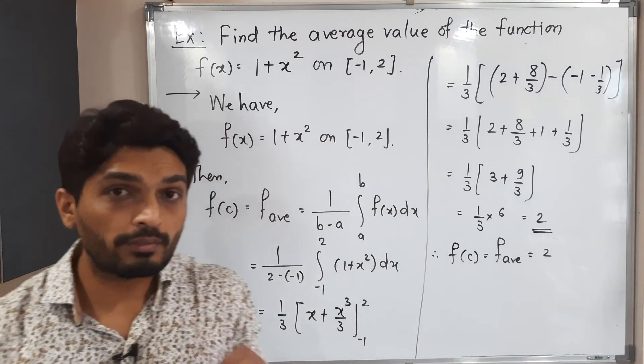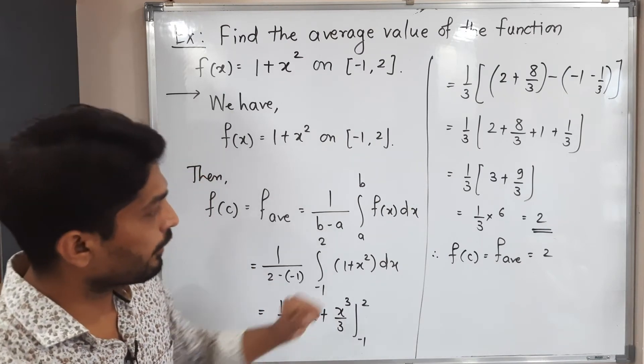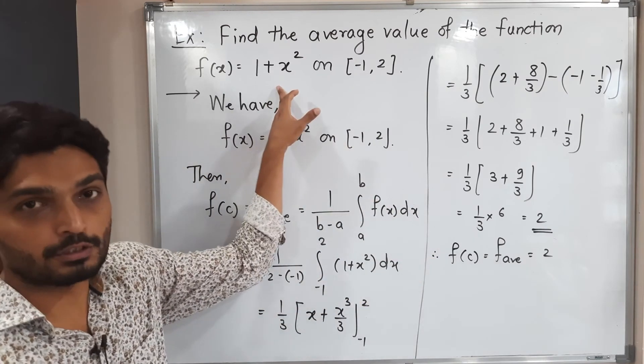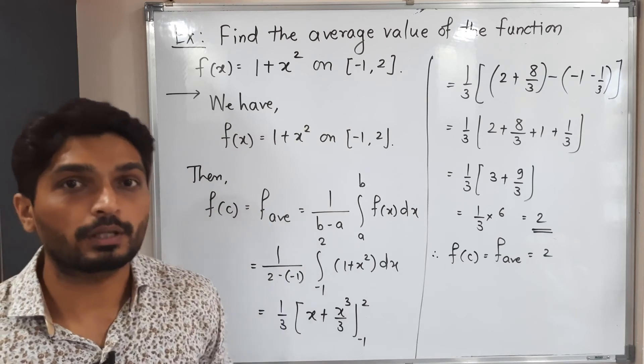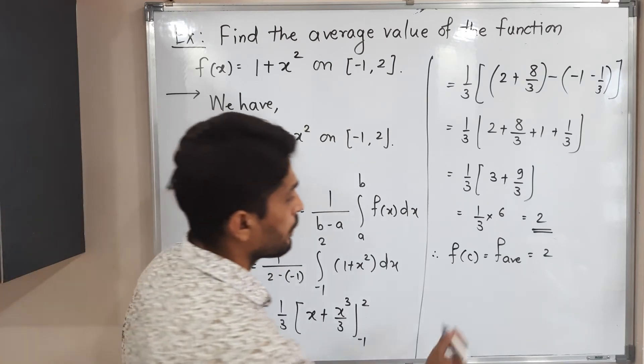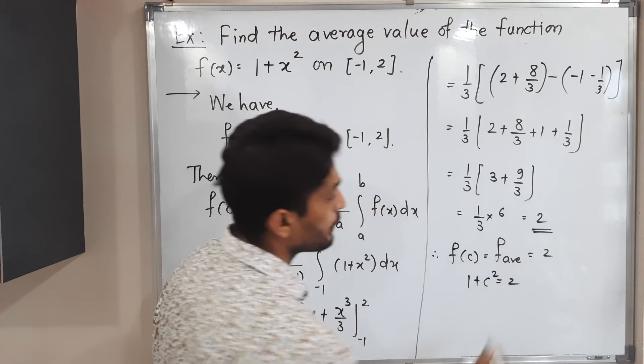Now we are interested to know the value of c. f(x) is 1 plus x square, so f(c) will be 1 plus c square is equal to 2.